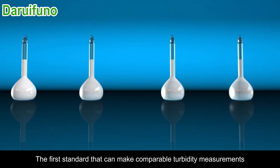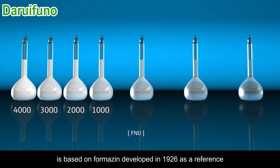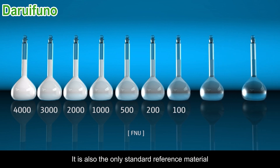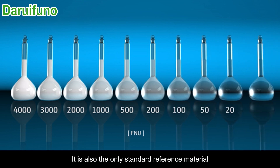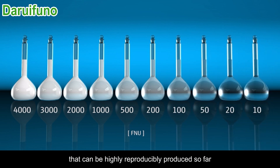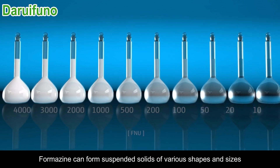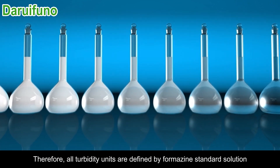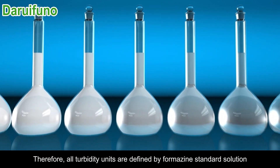The first standard that can make comparable turbidity measurements is based on formazine, developed in 1926 as a reference. It is also the only standard reference material that can be highly reproducibly produced so far. Formazine can form suspended solids of various shapes and sizes; therefore, all turbidity units are defined by formazine standard solution.